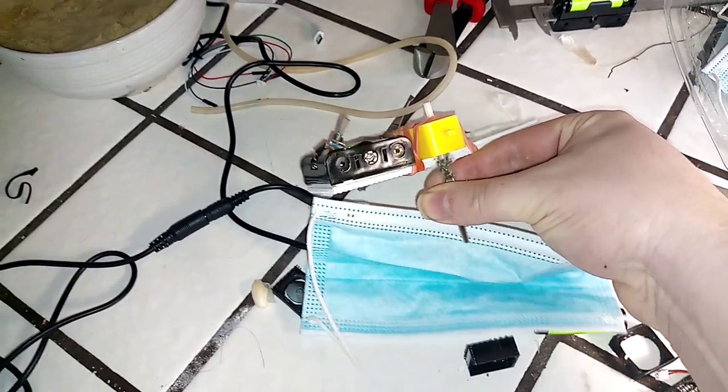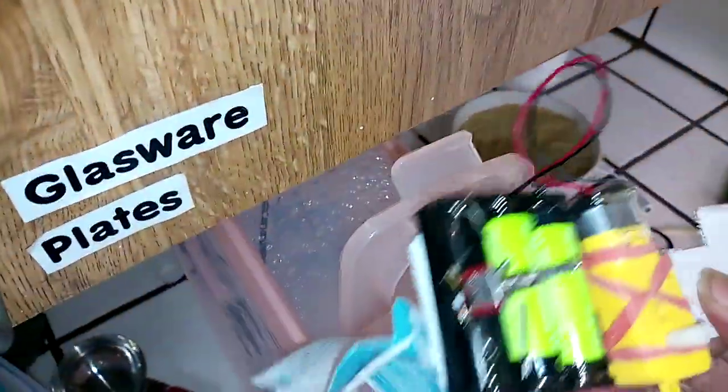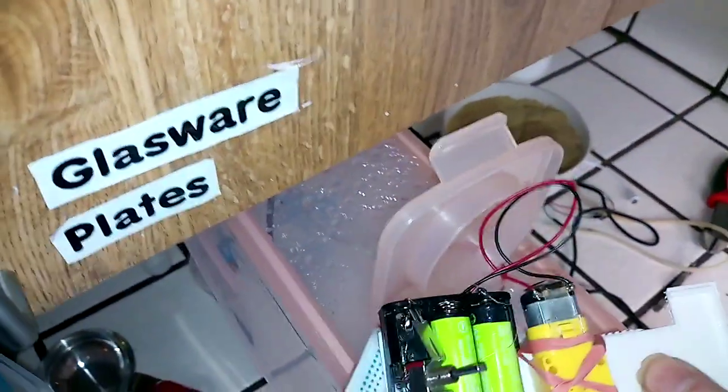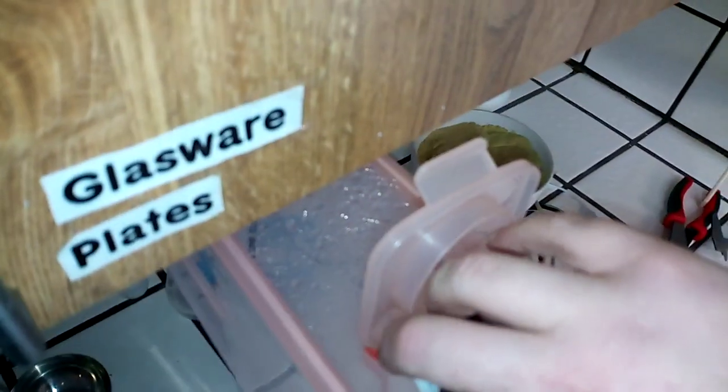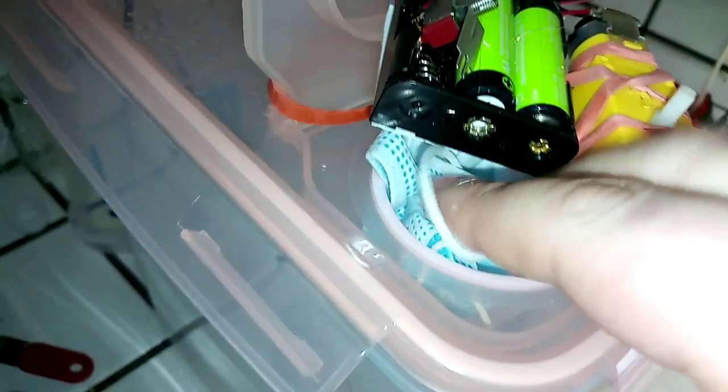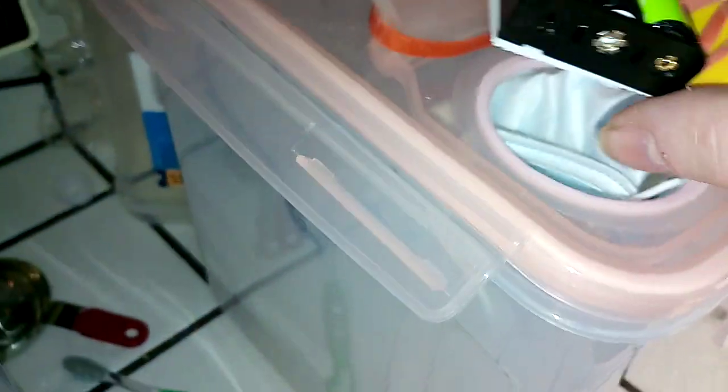Grab the mask in the middle. Stuff it in here. And it can go pretty much every which way. It will unfold itself once it's in the box. The box itself is a 6.3 liter cereal container. Nothing fancy.